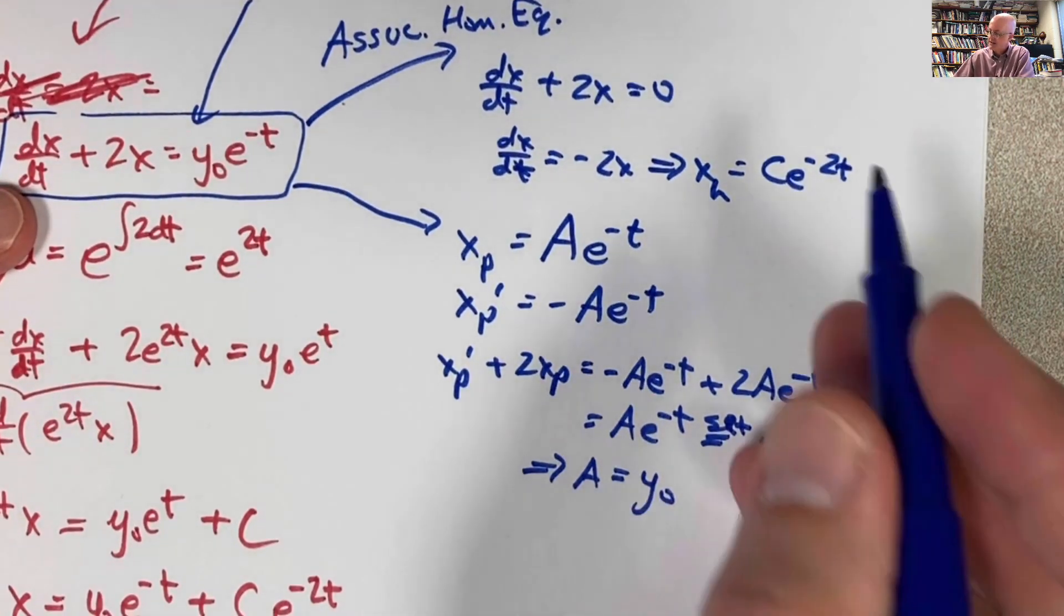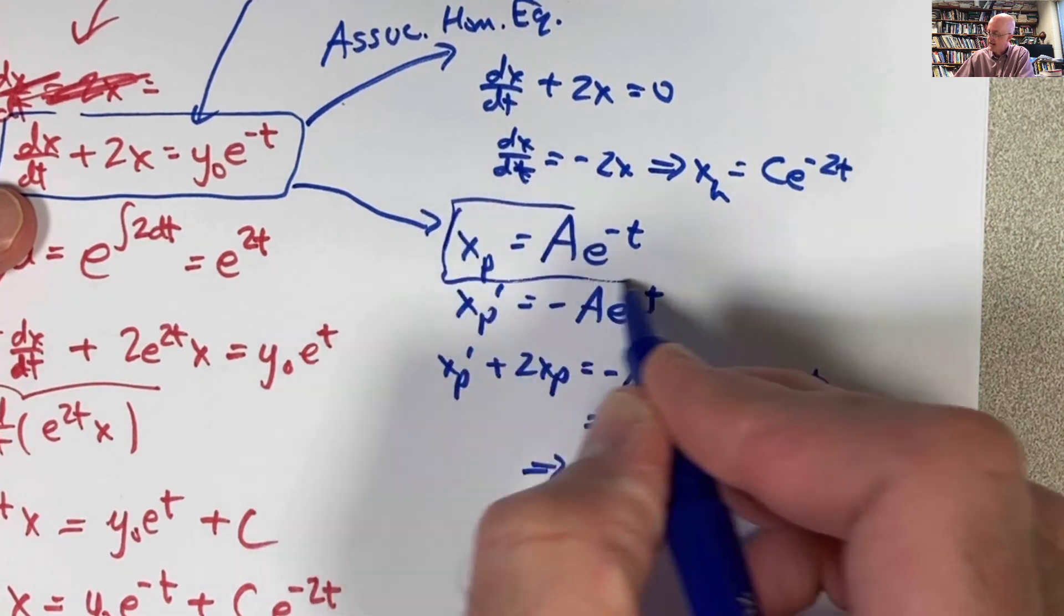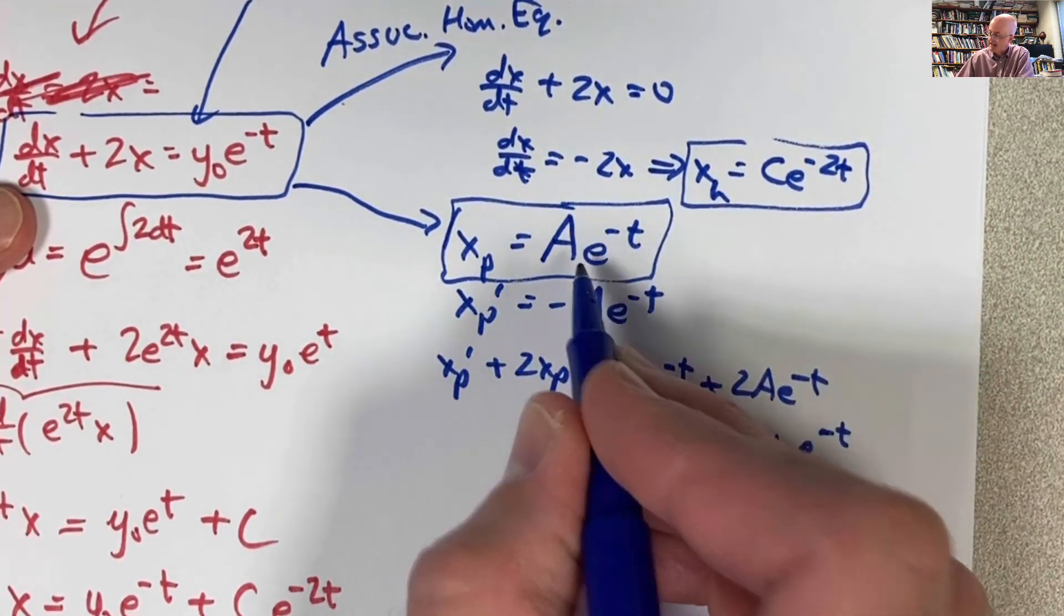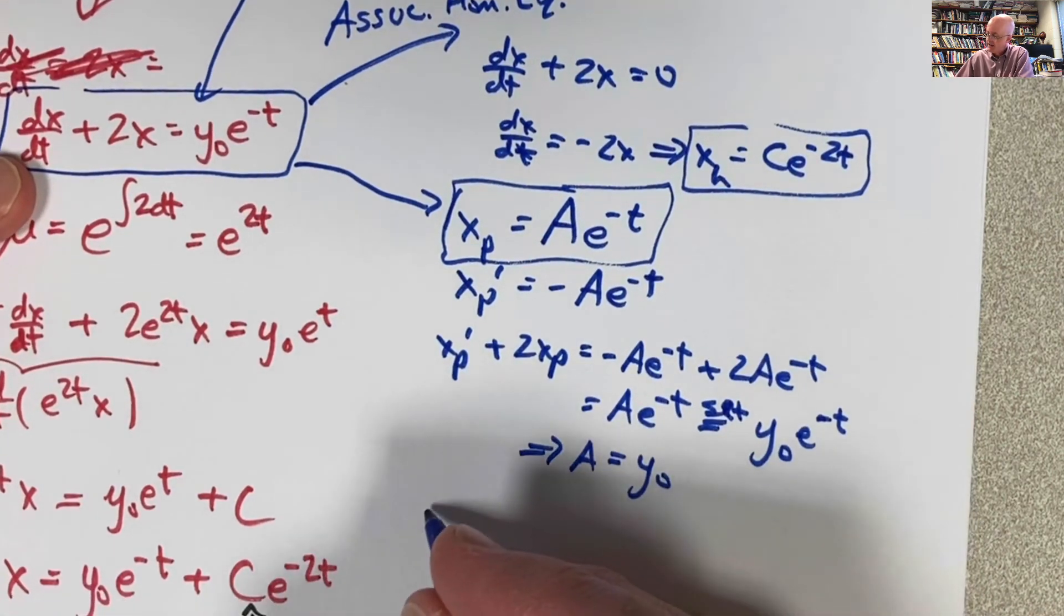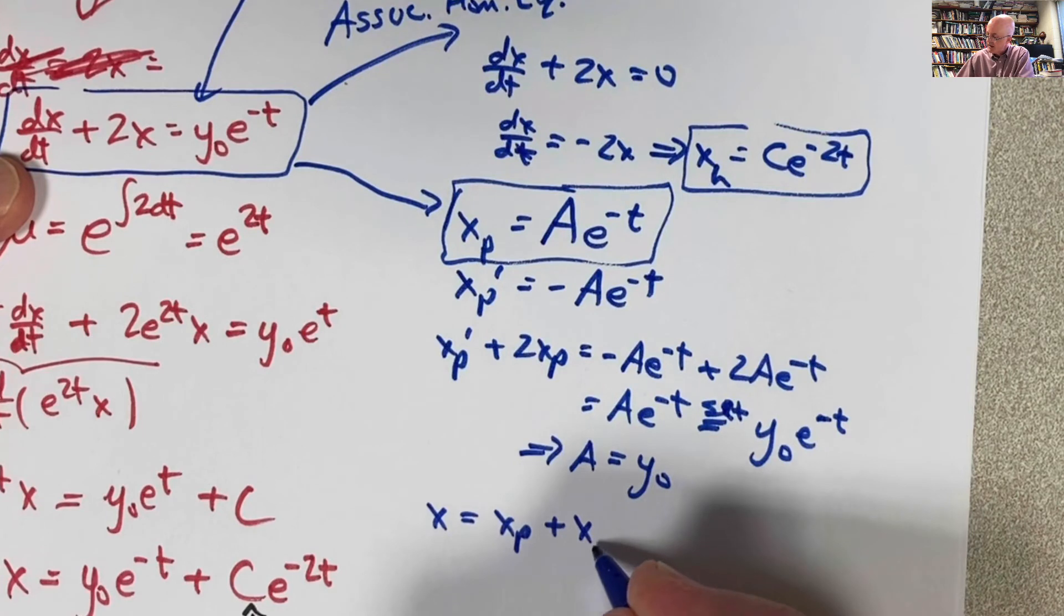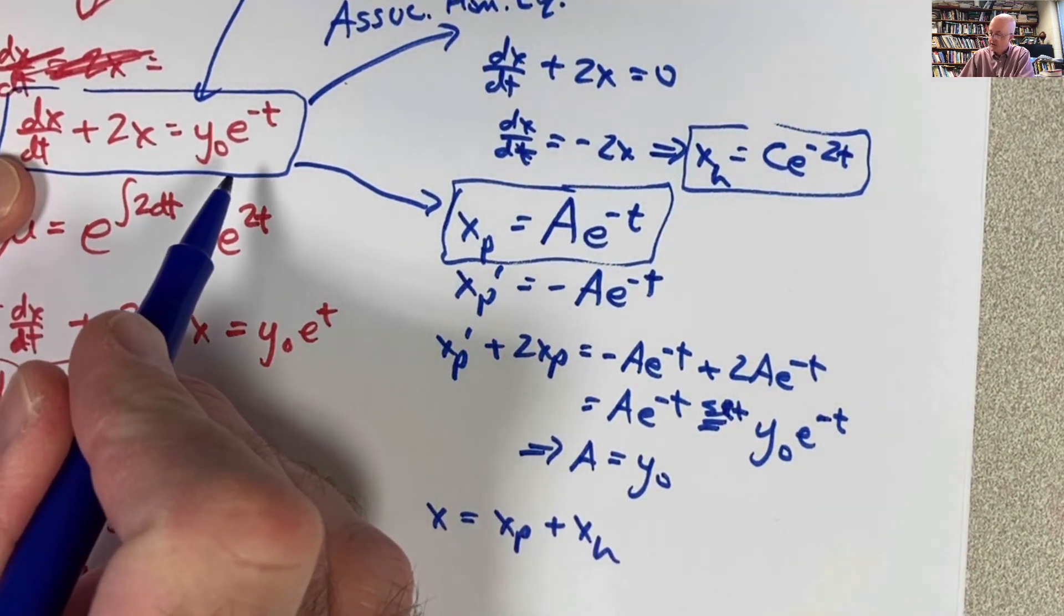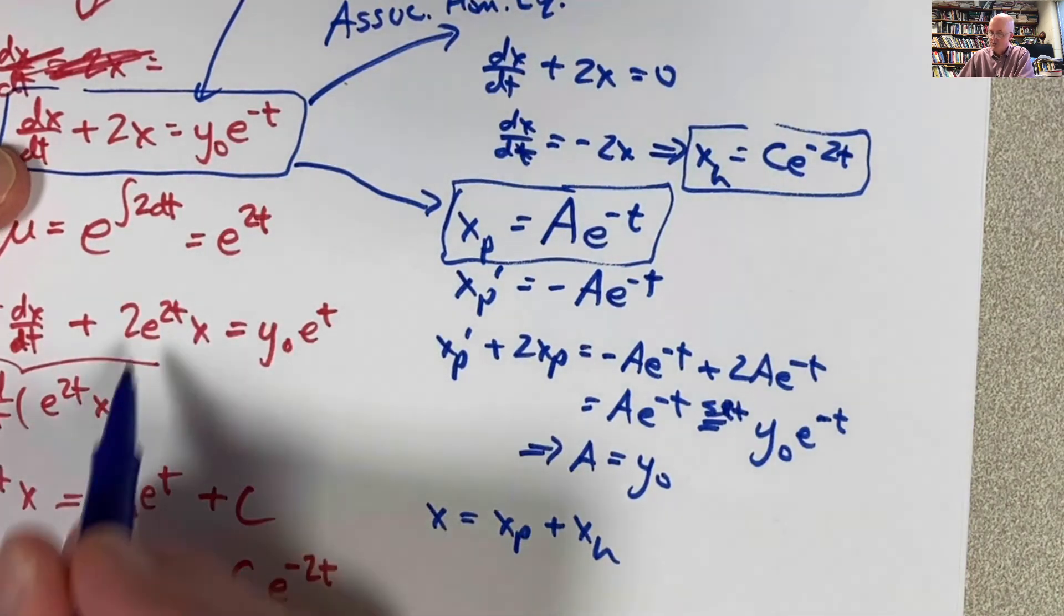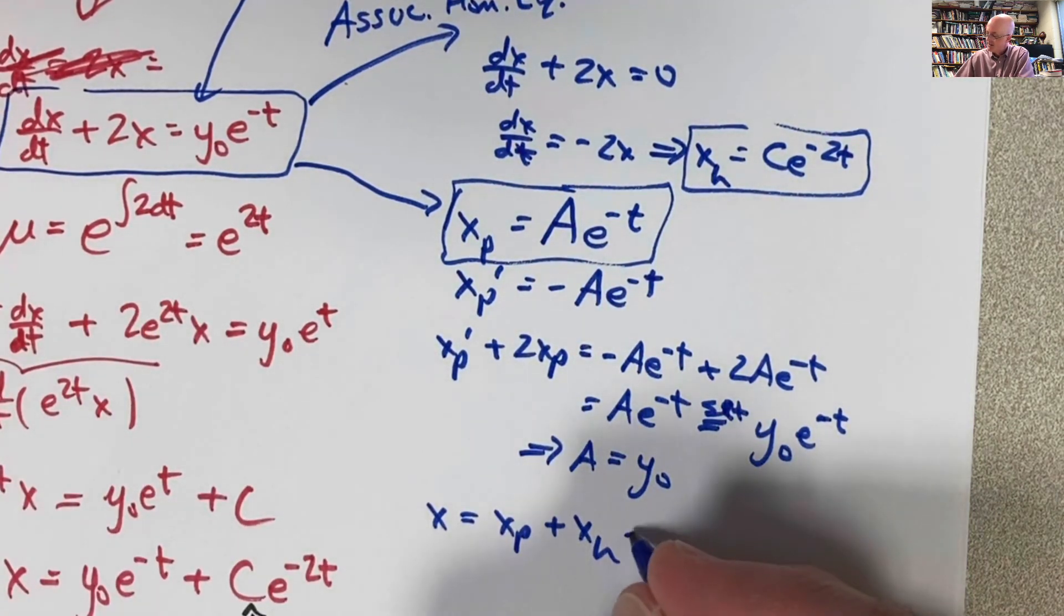Now we add these two functions, xp and xh, where the c there is arbitrary and the a is y0. And we would get then our general solution to the non-homogeneous or inhomogeneous equation. And we hope that this matches what we got with integrating factors, which you can see over here. Let's see what happens.